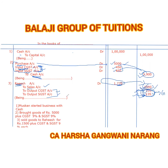Therefore, being a liability, output GST is a credit. So when you collect GST on sales — output CGST 135 and output SGST 135 — this 135 plus 135 becomes your liability, and therefore it is credited.